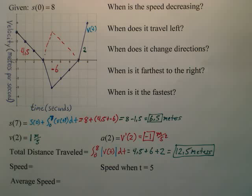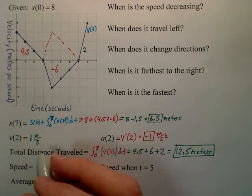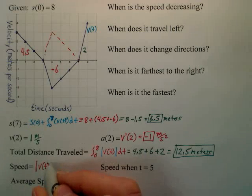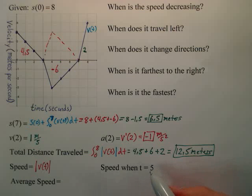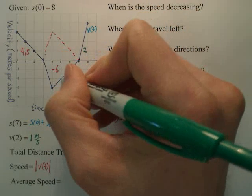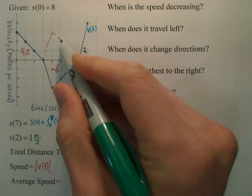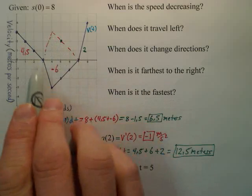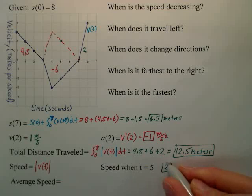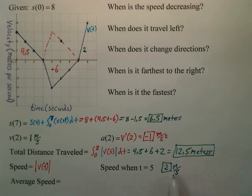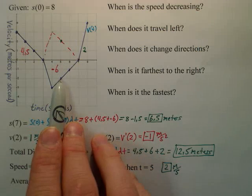Speed is velocity, but you don't care about direction. The definition of speed is the absolute value of velocity. So what would be my speed at time 5? My velocity at 5 was negative 2, but the absolute value flips it — anything that was upside down gets flipped over. So my speed at time 5 is actually positive 2 meters per second.